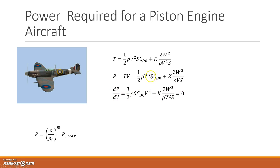So dP/dV. When I differentiate this part, I get 3 over 2 rho S CD0 V squared. And when I differentiate this part, I get minus, because that's V to the power minus 1, minus 2W squared over rho V squared S.